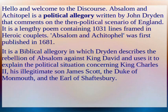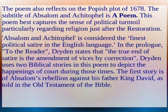Absalom and Achitophel was first published in 1681. It is a biblical allegory in which Dryden describes the rebellion of Absalom against King David and uses it to explain the political situation concerning King Charles II, his illegitimate son James Scott, the Duke of Monmouth, and the Earl of Shaftesbury. The poem also reflects on the Popish Plot of 1678. This poem best captures the sense of political turmoil, particularly regarding religion just after the Restoration.